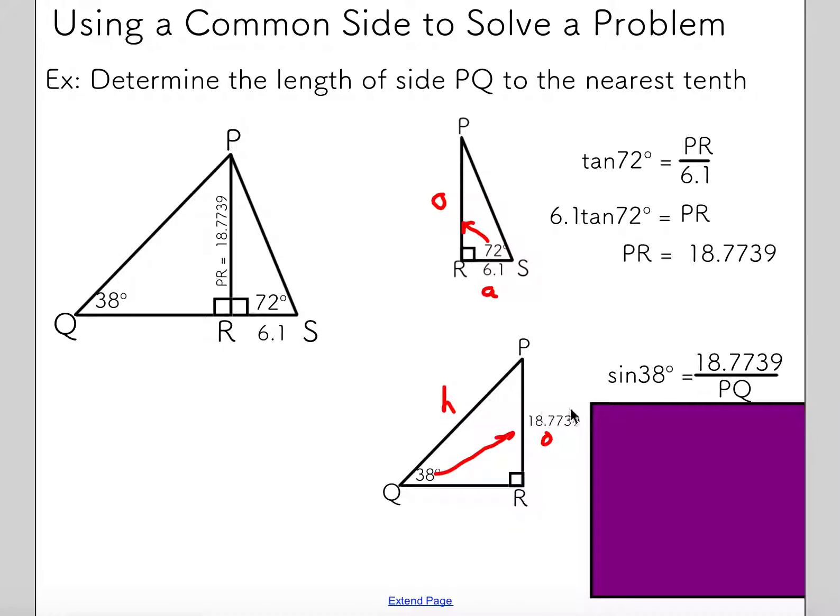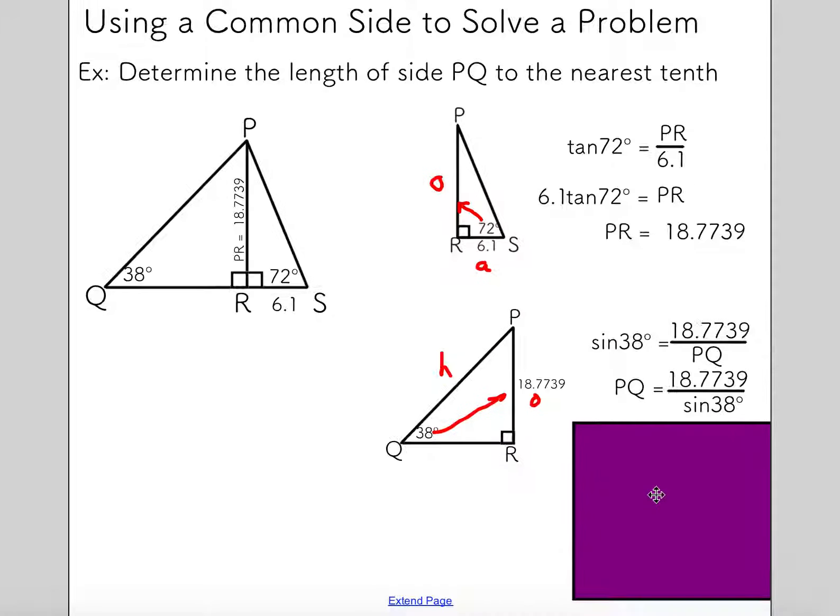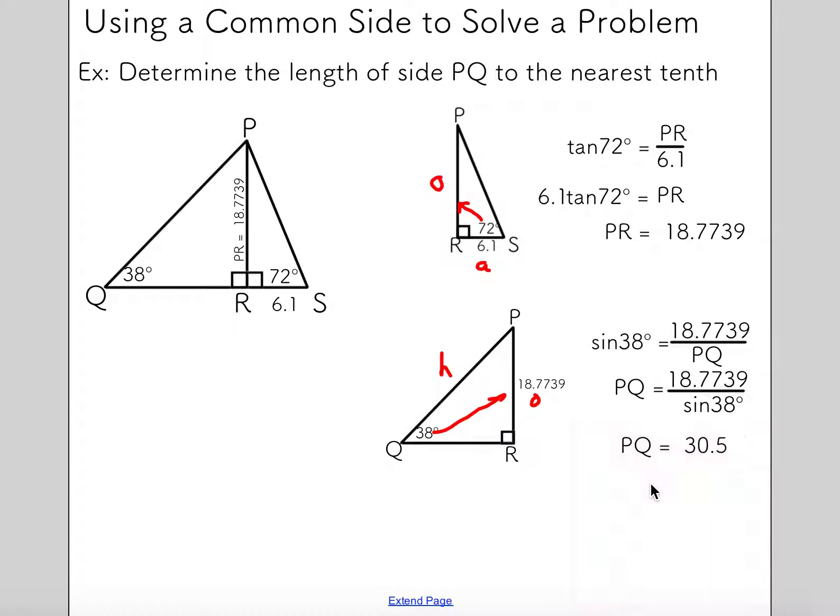I'm going to write my sine ratio. I'm going to say the sine of that 38 degree angle is the opposite side over the hypotenuse. I've got to do a little bit of fancy algebra here. You can just take this PQ and multiply it up to the other side while dividing the sine 38 to the other side. You've got a nice little expression here that you can type into your calculator. If you're in degree mode and you punch this in, you should get 30.5.